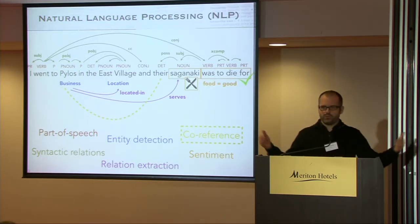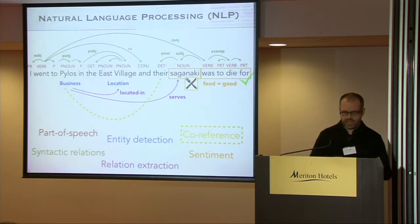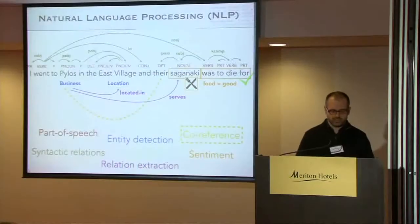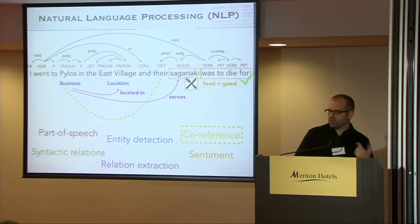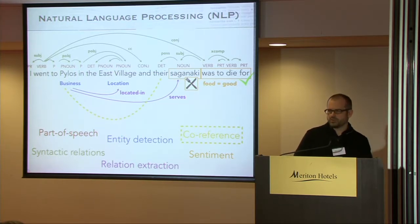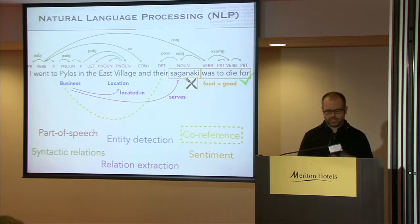Further up the semantic chain is sentiment analysis — understanding that Saganaki is a kind of food, "was to die for" expresses positive opinion about something, and the syntactic and co-reference relationships tell us this person has a positive opinion about the food at Pilos. There are many other NLP tasks. The case studies I'll look at span the spectrum: at the low level, part-of-speech tagging, and at a higher level, sentiment analysis — showing where dictionaries can dramatically improve accuracy.